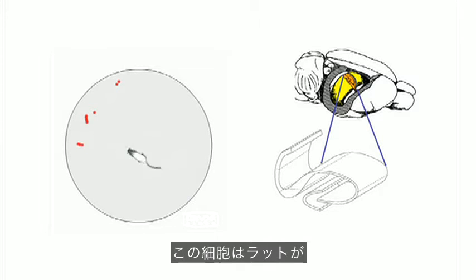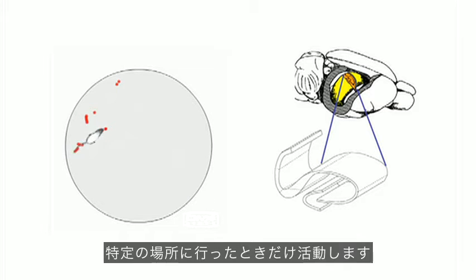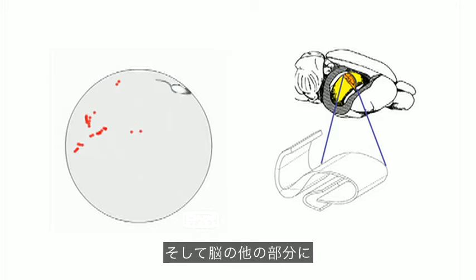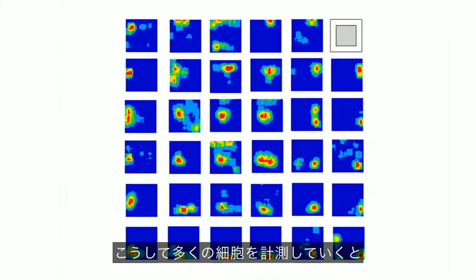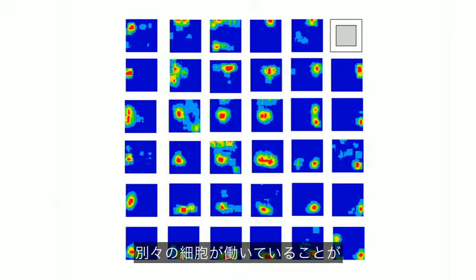So what we see is that this neuron knows whenever the rat has gone into one particular place in its environment, and it signals to the rest of the brain by sending a little electrical spike. So we could show the firing rate of that neuron as a function of the animal's location. And if we record from lots of different neurons, we'll see that different neurons fire when the animal goes into different parts of its environment, like in this square box shown here.